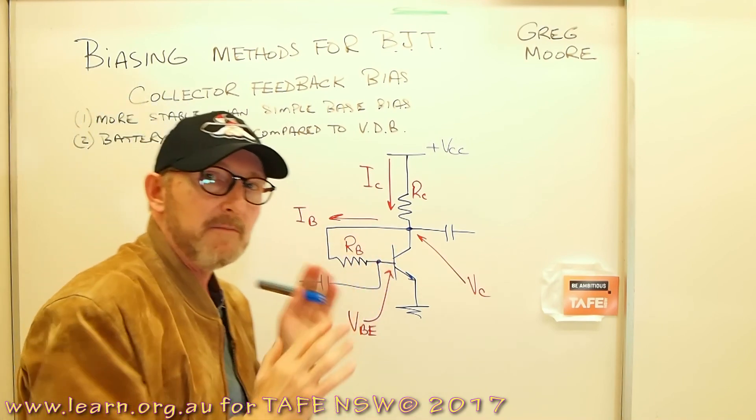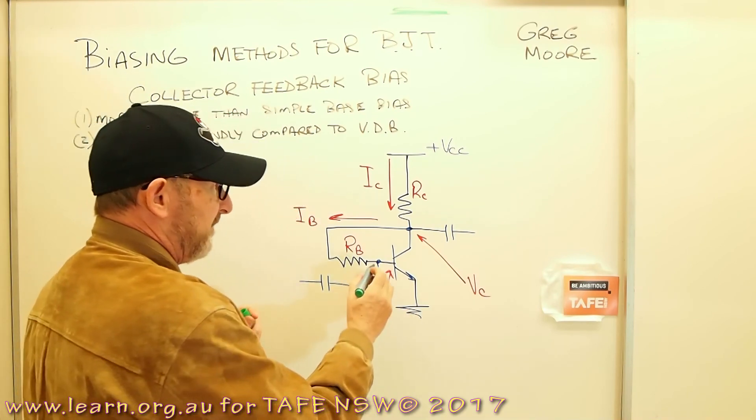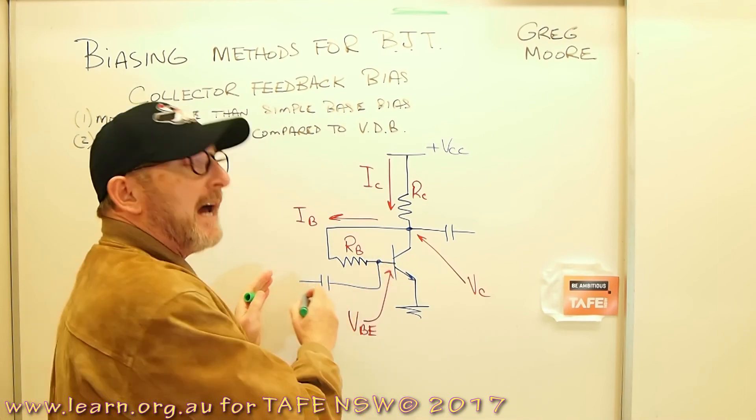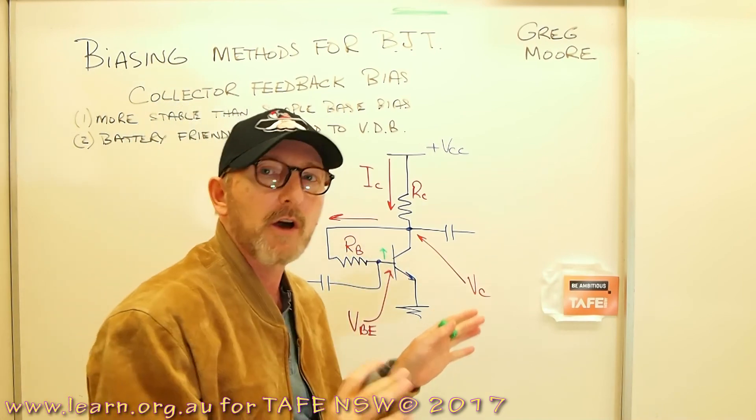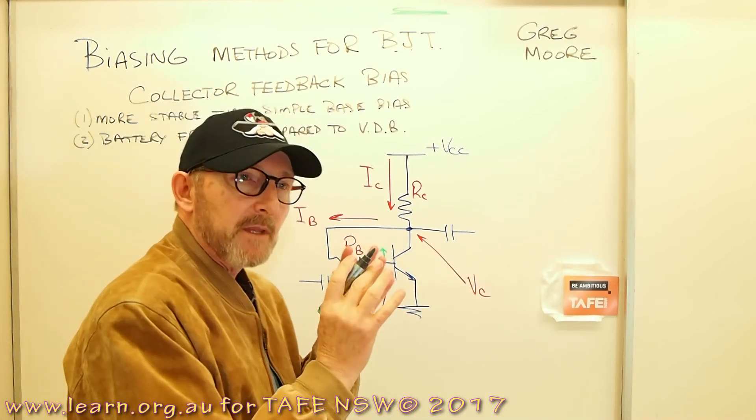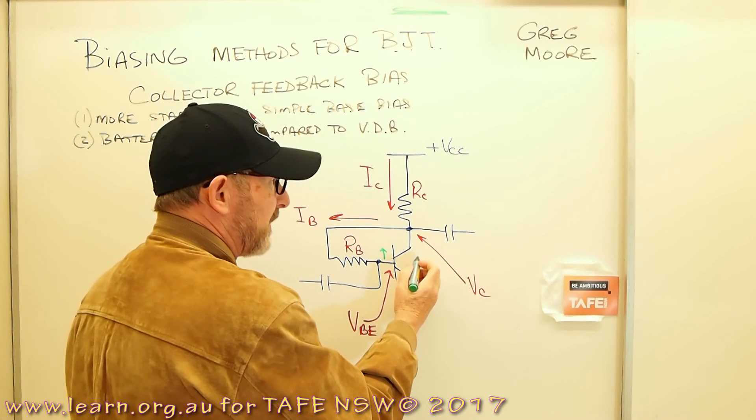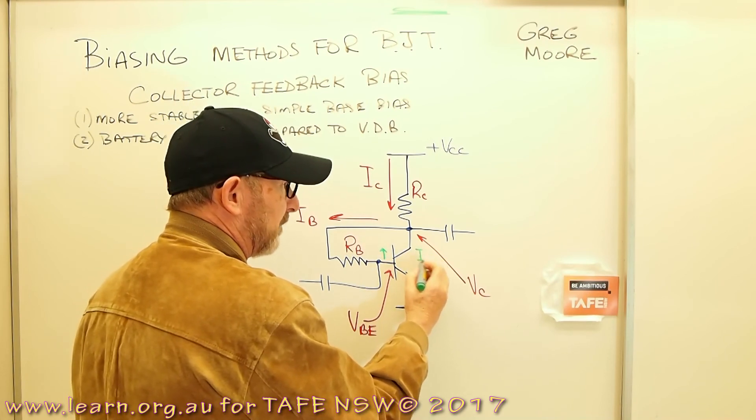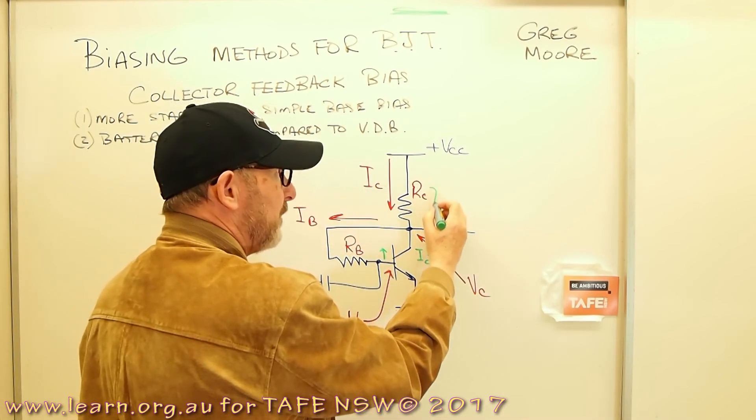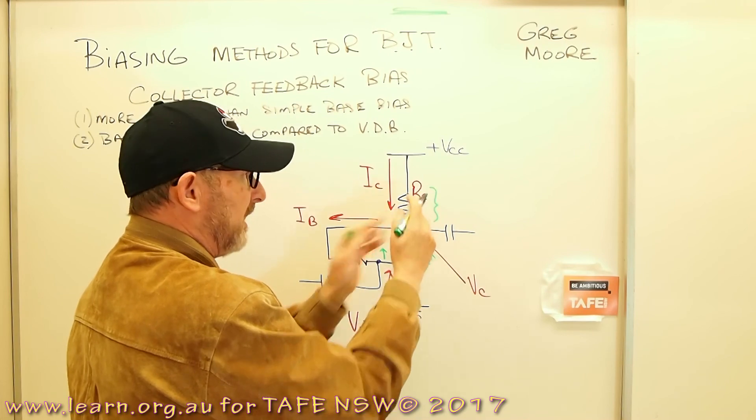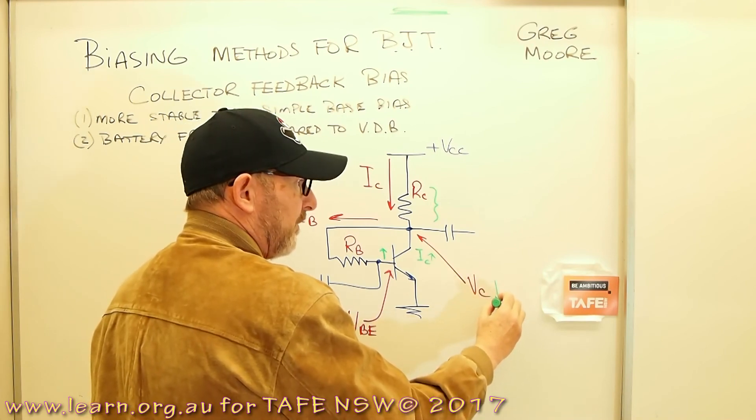And what does that really mean as far as stability goes? Well this is where the magic comes into play. Because if the AC input signal increases the voltage ever so slightly on the base of the transistor, the base current of course also increases. And when the base current increases, IC is also going to increase. IC goes up. If IC goes up, we get a bigger voltage drop across the collector resistor, which results in the collector voltage VC falling.